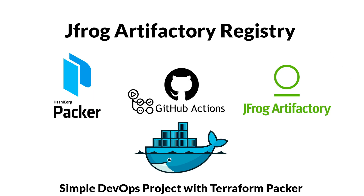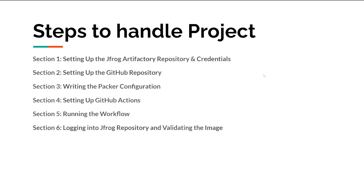Let's start and see what things we are discussing today. We are going to see how to set up the JFrog Artifactory and the credentials. Then we will check the settings of the GitHub repository, write the Packer file and configuration which builds the Docker image and makes the tag. Then we will set up the GitHub Actions YAML file with commands to post the Docker image to the JFrog Artifactory. Then we will run the workflow and validate that our image has reached its destination.